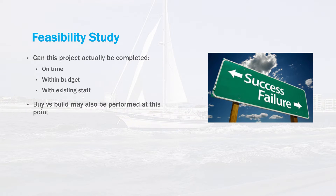The very first step in the process is the feasibility study. This process may be skipped for very small projects, but it can be a critical step for extremely large projects. In this phase, the project is looked at holistically to determine the general timeframe, the approximate budget, and the number of staff that will be required. Project staff will determine if the project can be fit into the existing company budget and resources. Staff may also determine if there's already software on the market that can be purchased or modified instead of developing a custom product. This is referred to as the buy versus build scenario. The outcome of this phase is an approval or rejection from company management whether or not the project will be approved.